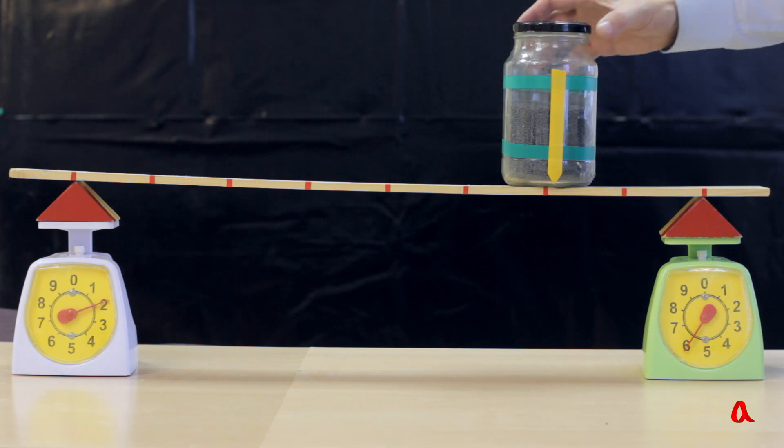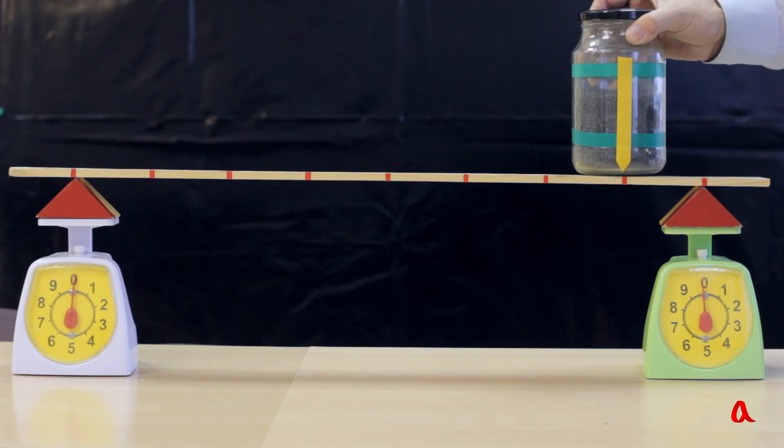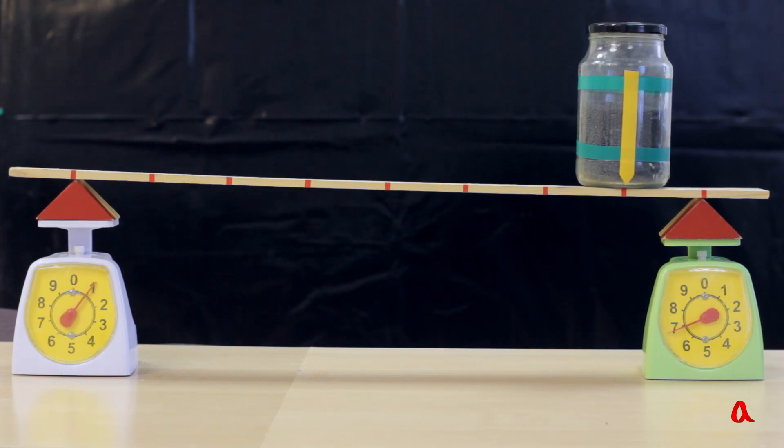If the distance ratio is 7 to 1, the supporting points loadings will have a 1 to 7 ratio.